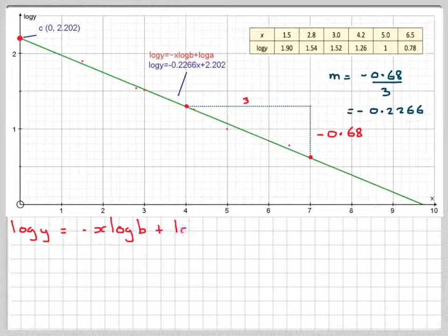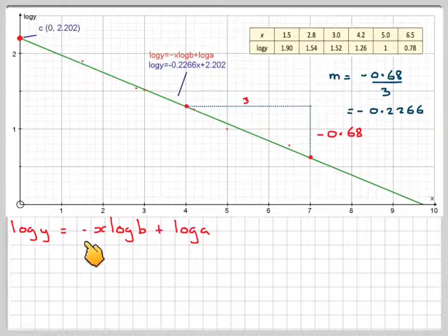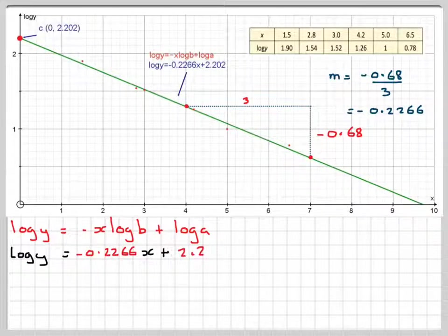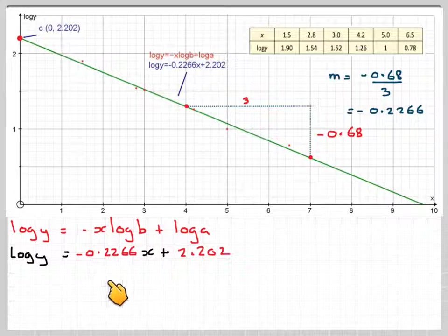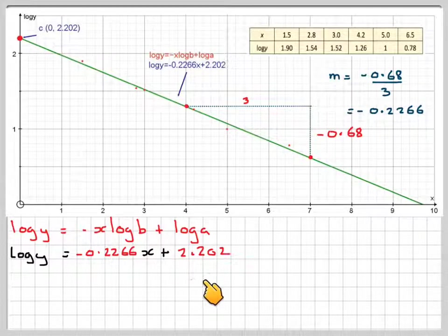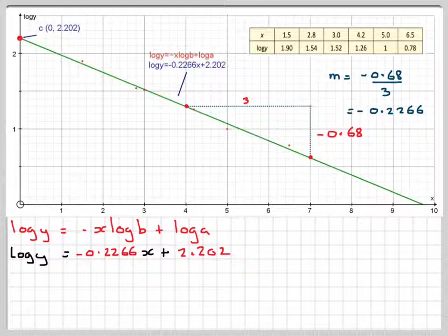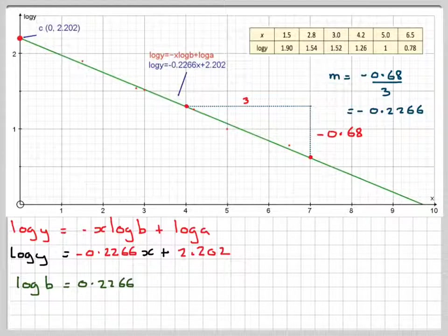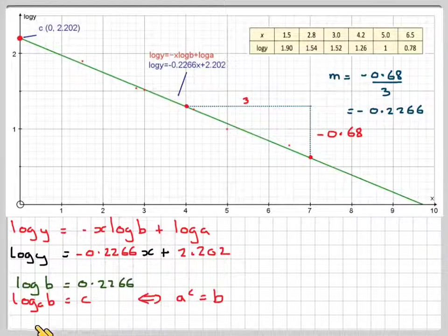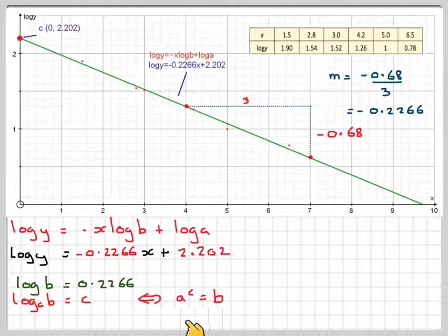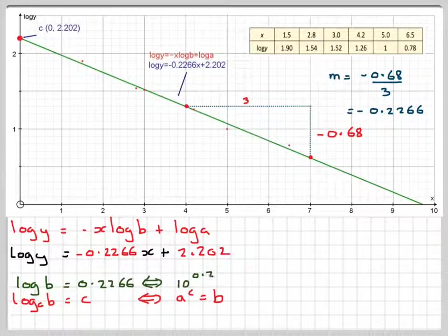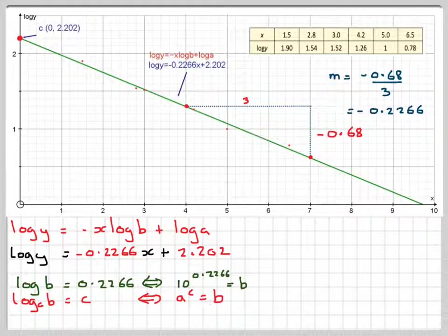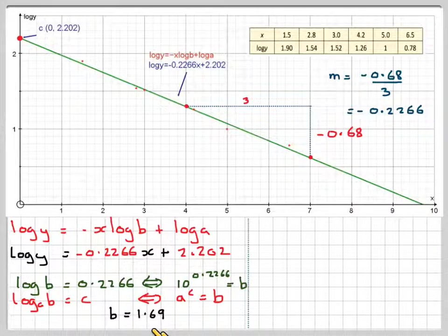Going back to our expression we've got log of y equals minus x times log b plus log of a. So log of y is going to be equal to minus 0.2266x plus 2.202. From this we can deduce that log b, log base 10 of b, has to be equal to 0.2266. Using our rules of logarithms, log to the base a of b equals c implies that a to the c equals b. Therefore we're going to get 10 to the 0.2266, and that's equal to 1.69.